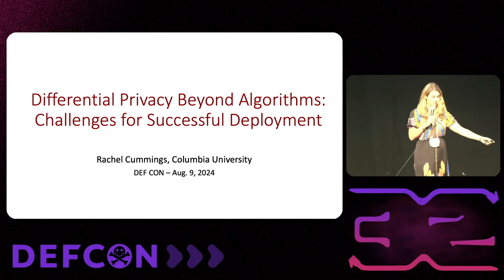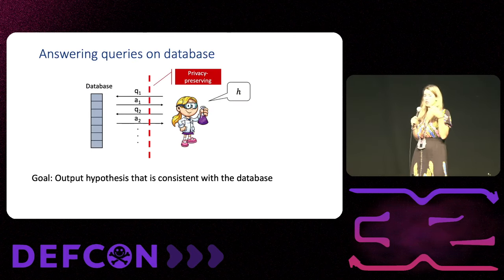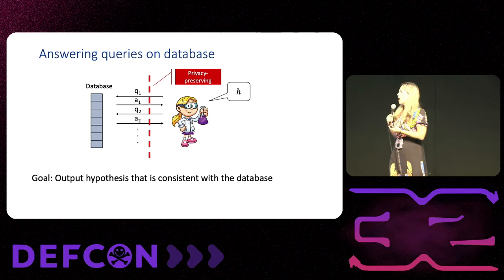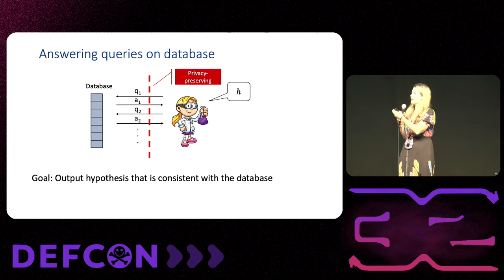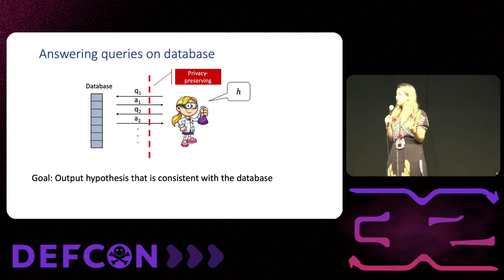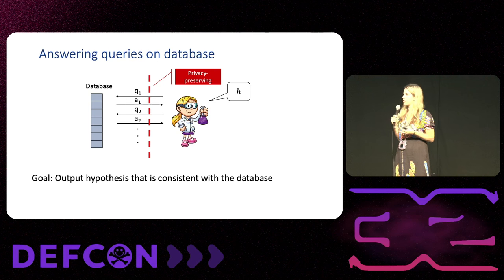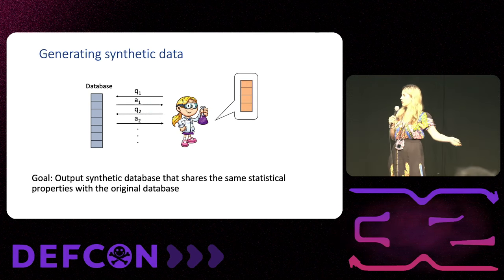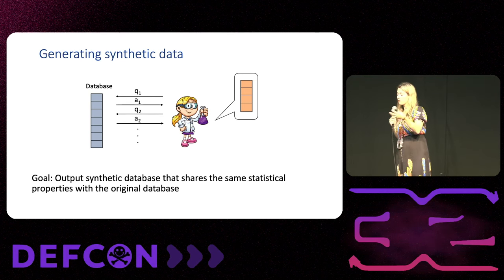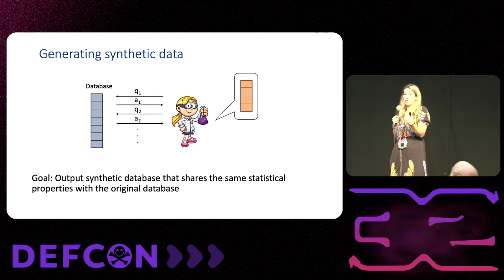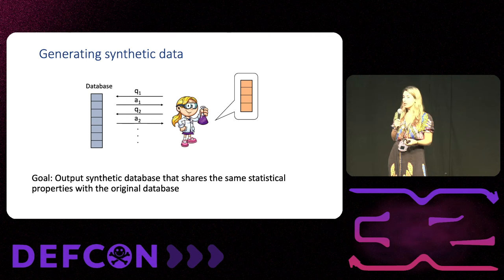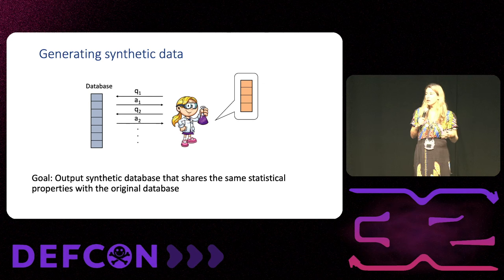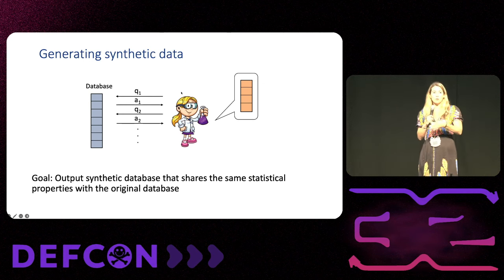The mental model you should think about as we talk about differential privacy: there's a database, it's important, and we want to analyze it — do scientific or business analytics on it. There's an analyst who is going to send some queries and receive back answers. This process continues, and she makes some scientific discovery — maybe this drug works, maybe here is a database that can be freely published. You might want some kind of privacy-preserving barrier at some point in this process — maybe between the database and the analyst if you don't fully trust that analyst, or between the analysts and the outputs that are going to be publicly viewed.